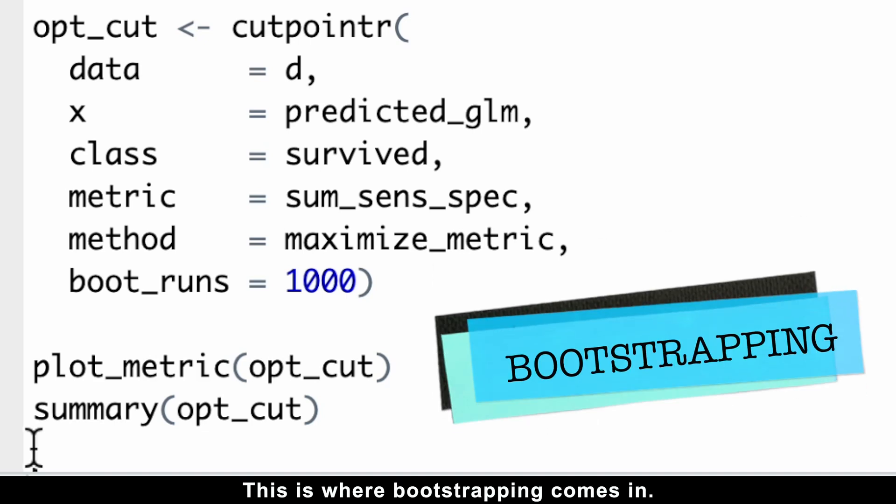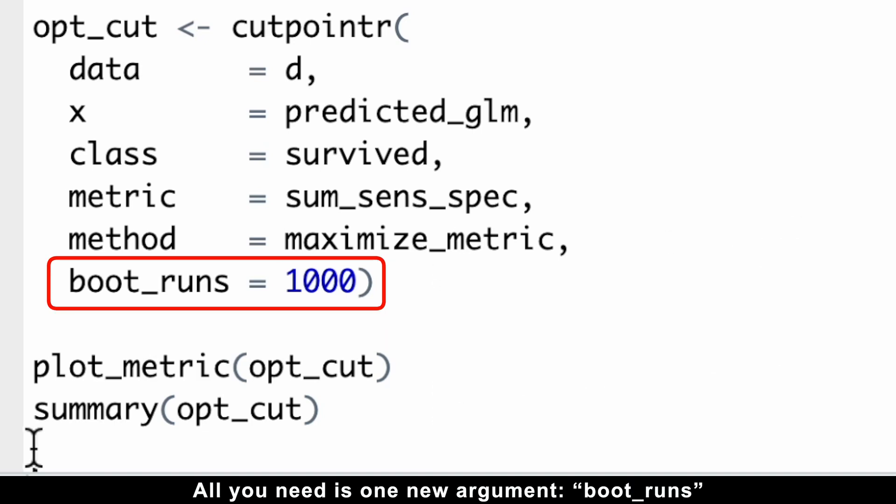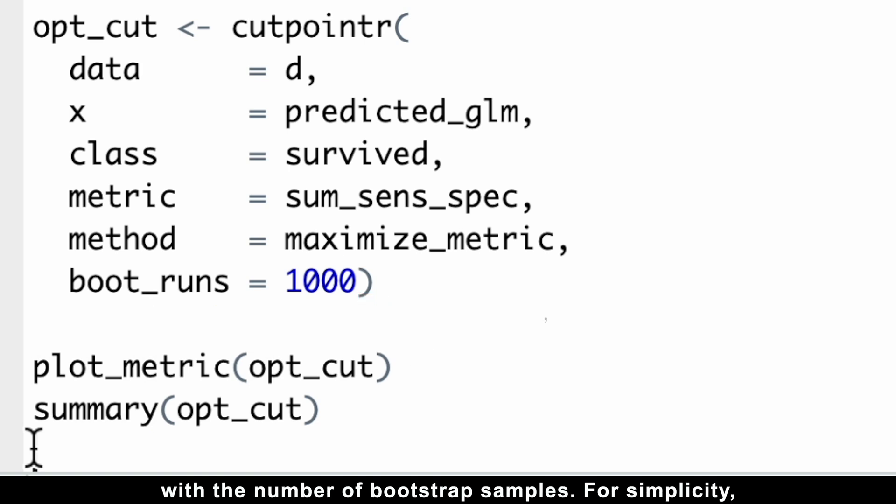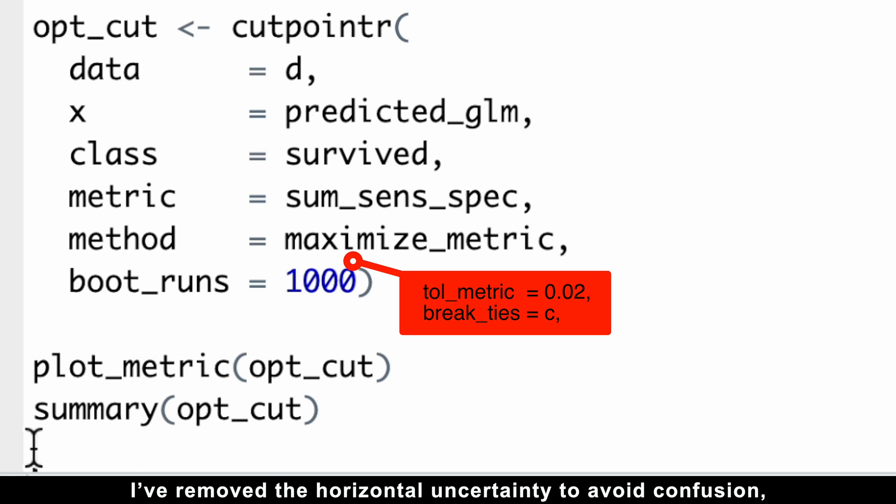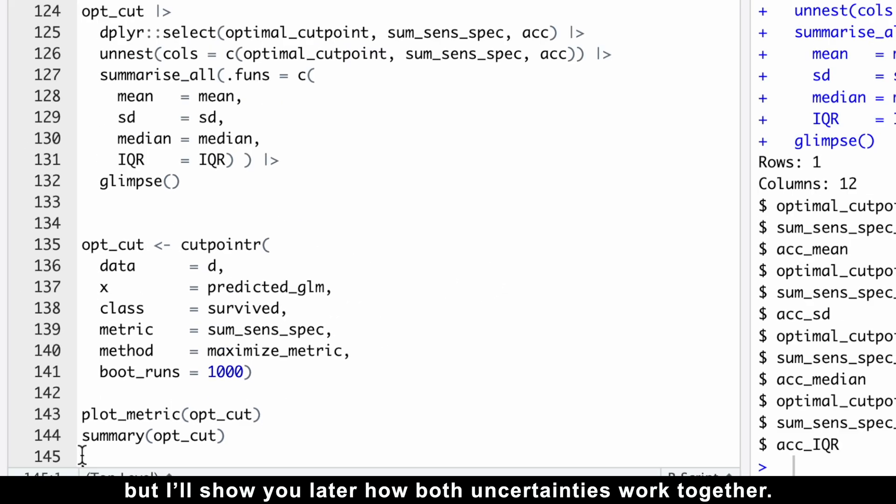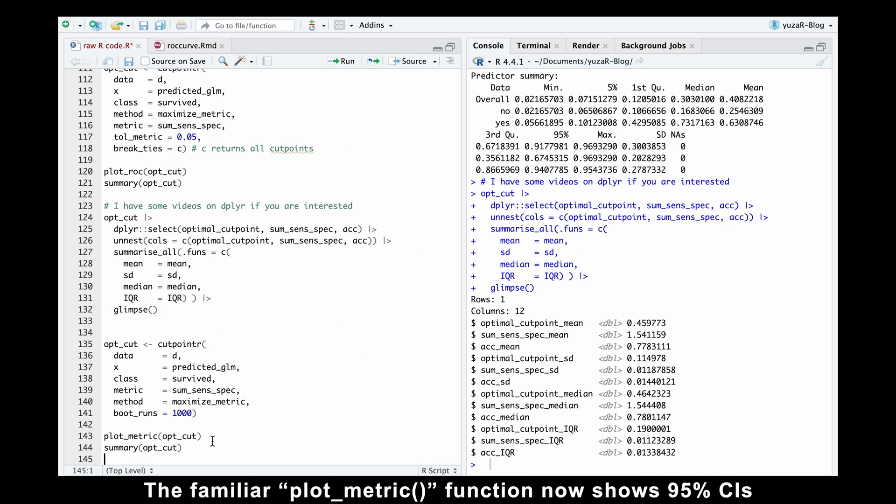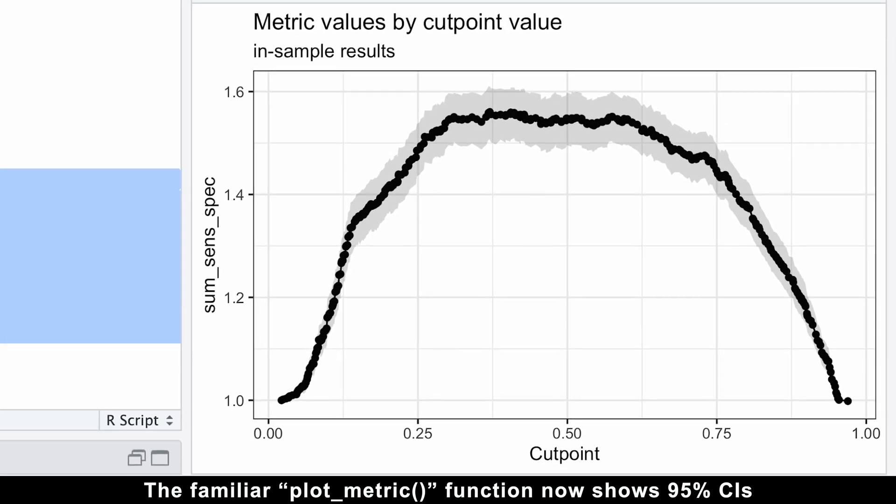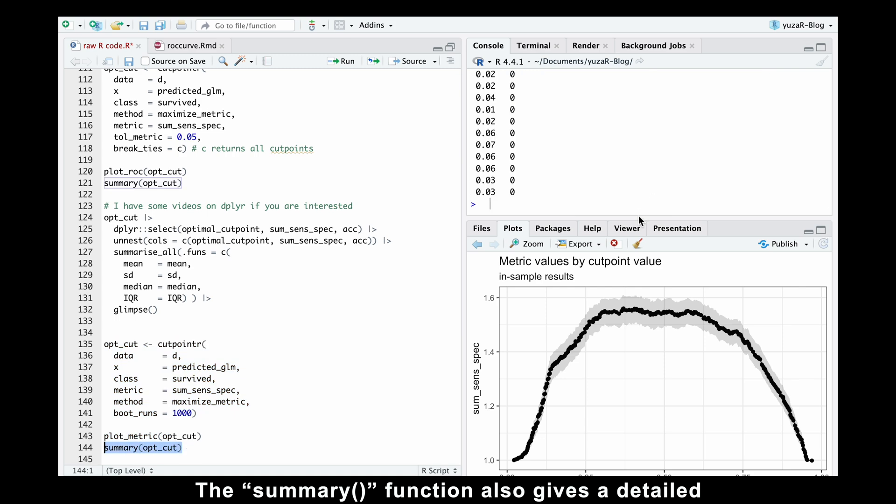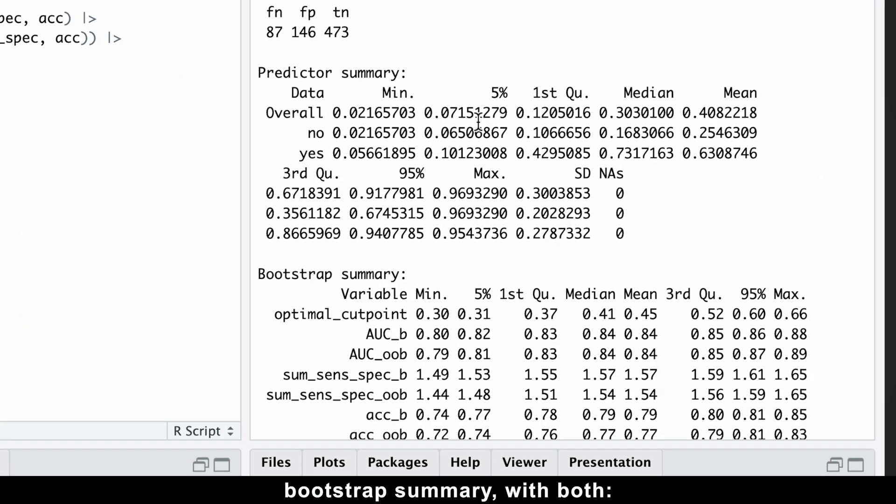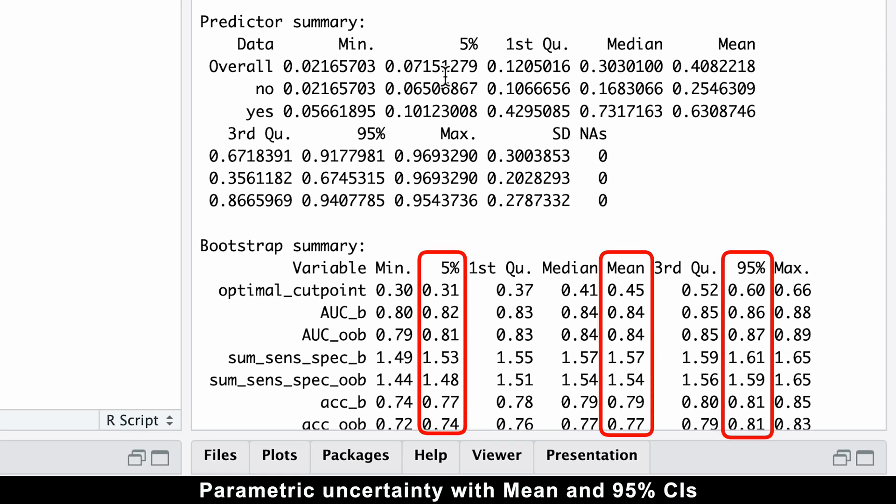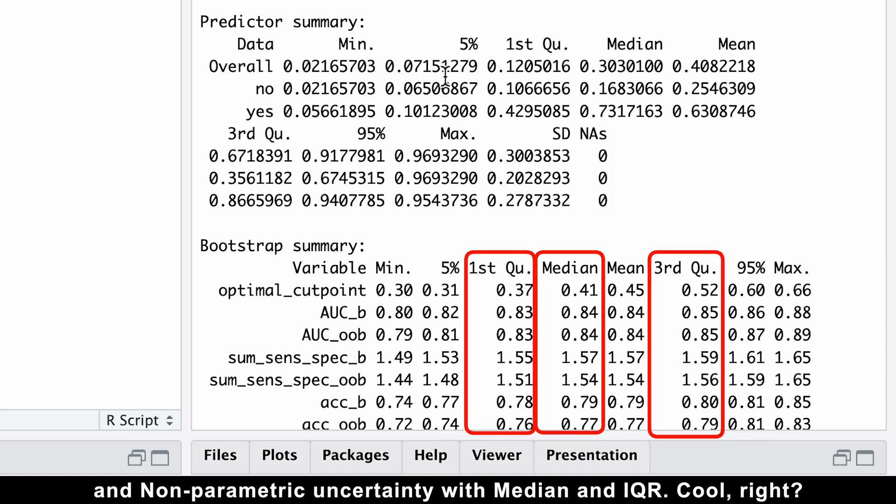And this is where bootstrapping comes in. All you need is one new argument, boot runs, with the number of bootstrap samples. For simplicity, I've removed the horizontal uncertainty to avoid confusion, but I'll show you later how both uncertainties work together. The familiar plot metric function now shows 95% confidence intervals across the entire ROC curve. The summary function also gives a detailed bootstrap summary with both parametric uncertainty with mean and 95% confidence intervals and non-parametric uncertainty with median and interquartile range. Cool, right?